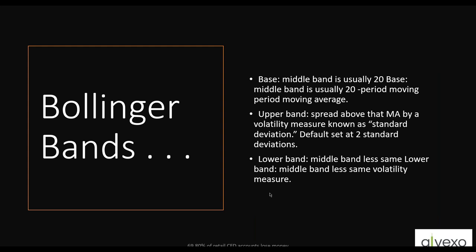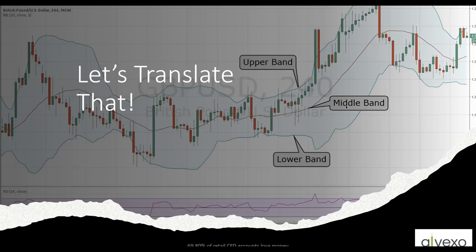You'll never have to calculate these manually. Just remember: the middle band is a 20-period moving average. The upper band is spread above the moving average by two standard deviations of volatility. The lower band is the exact opposite — minus two standard deviations. That forms the envelope: middle band, upper band, lower band.